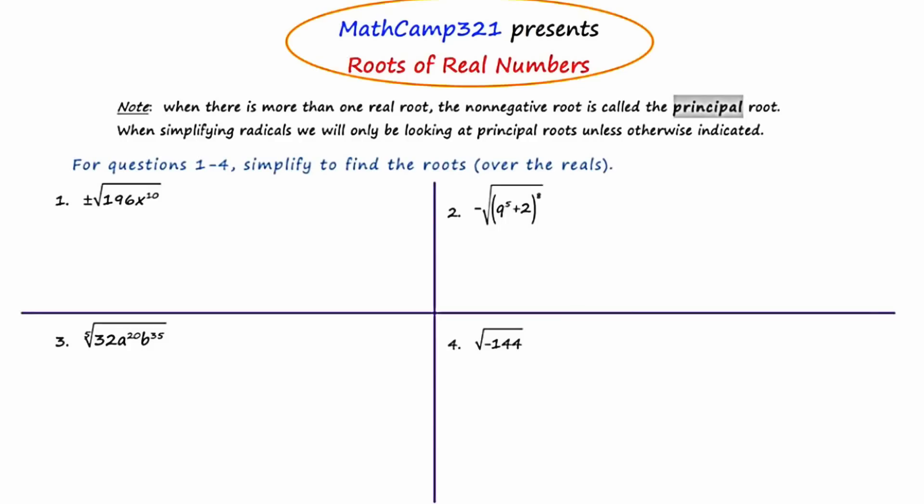Let's start with a little note. When there is more than one real root, the non-negative root is called the principal root. When simplifying radicals we will only be looking at the principal roots unless otherwise indicated. For questions one through four, simplify to find the roots over the real numbers.